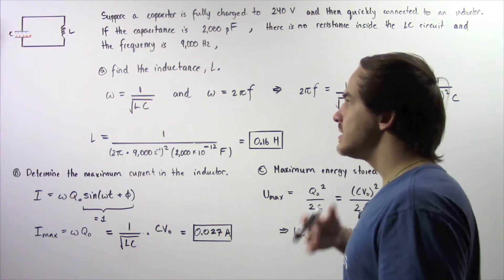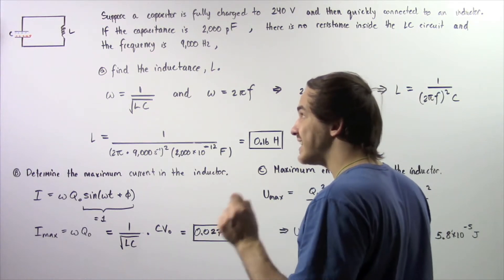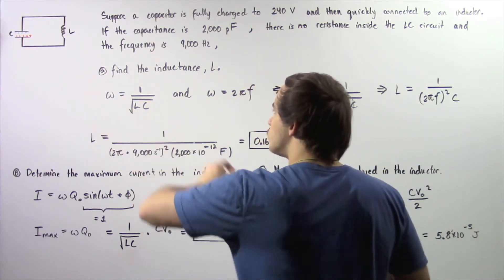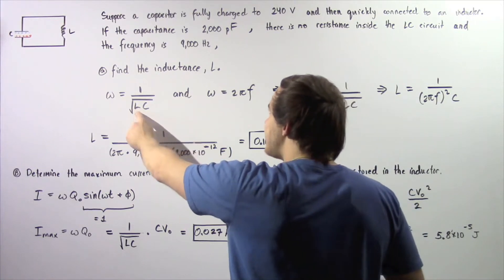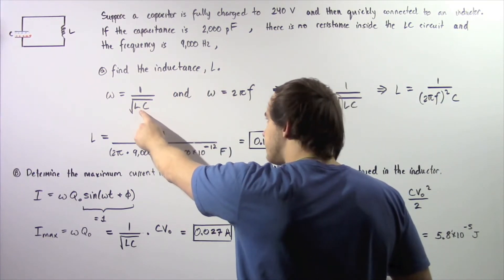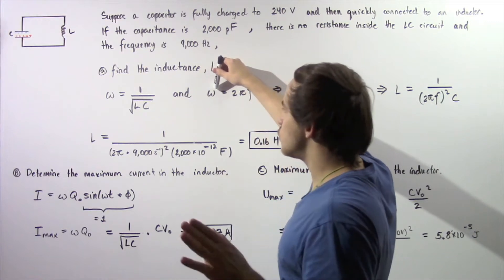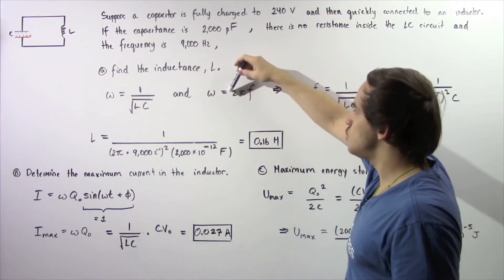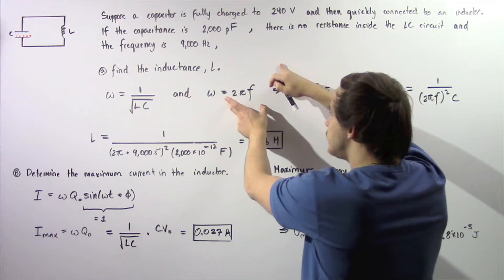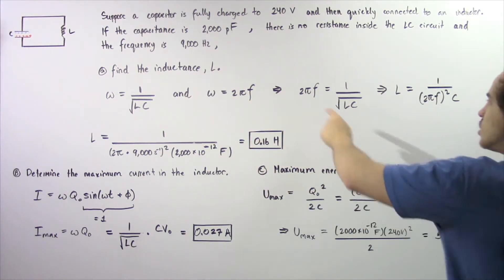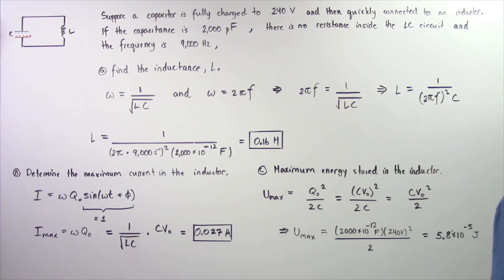Let's begin with part A. To find the inductance of the inductor, we use two equations. Recall that the angular velocity omega is equal to 1 divided by the square root of L multiplied by C, where C is the capacitance and L is the inductance. We also know that by definition, angular frequency is equal to 2 pi multiplied by the frequency. So we can equate these: 2 pi times frequency equals 1 divided by the square root of L times C.